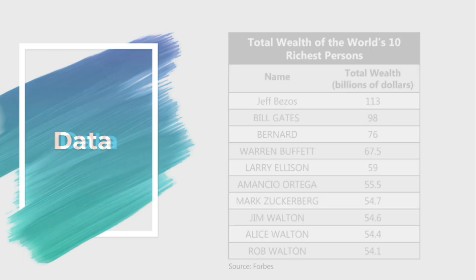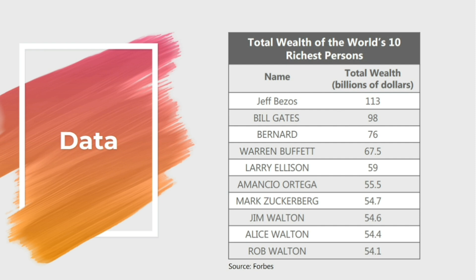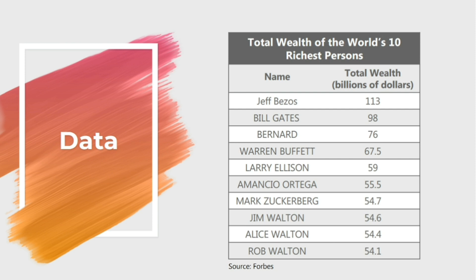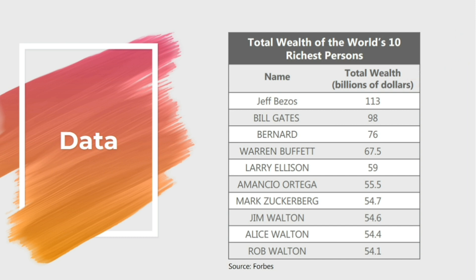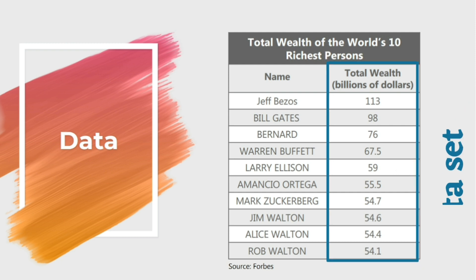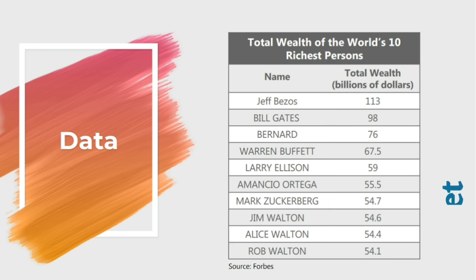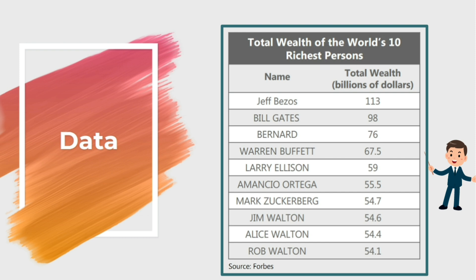Let's understand these terms with an example based on Forbes magazine showing the total wealth of the world's 10 richest people. An element is a specific object about which information is collected. Total wealth in our example is a variable — a characteristic of elements that assumes different values for different elements. The value of a variable for an element is called an observation, whereas the collection of observations on one or more variables is called a data set. The whole information given in the table is called data, presented here in tabular form.